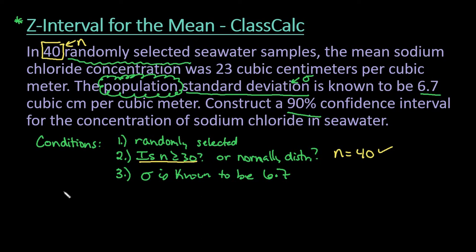So now we need to find our important information. The things that we need to know in order to use the formula are the sample mean, and it tells us that our sample mean is 23 cubic centimeters per cubic meter. We need to know our standard deviation, which is 6.7. We need to know our sample size, and then we need to find our critical value. It could be z_c or z-star, depending upon your text. It's just the z-score that corresponds to 90% of the area in between.